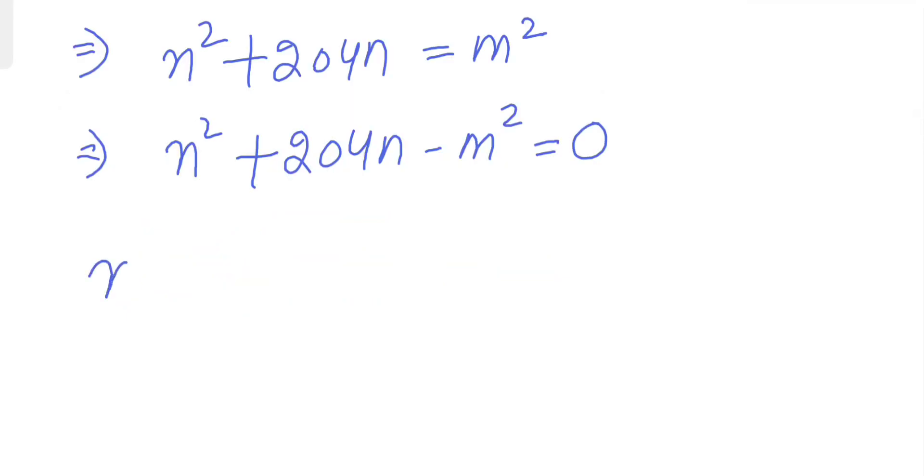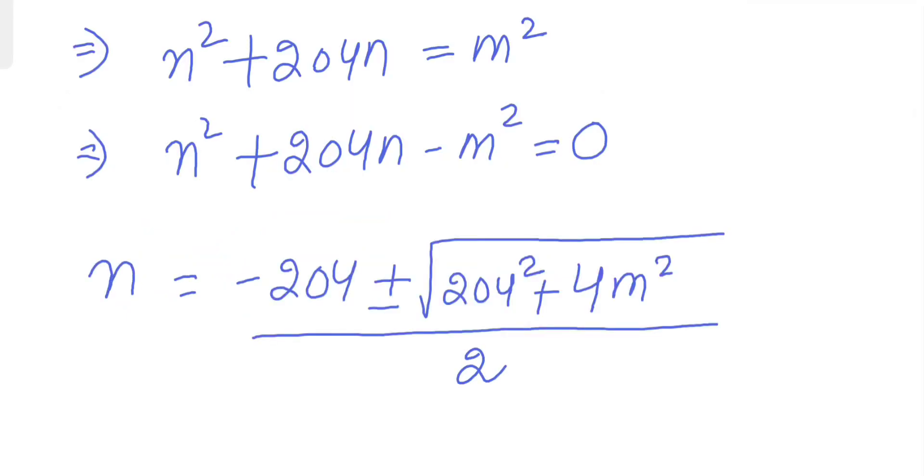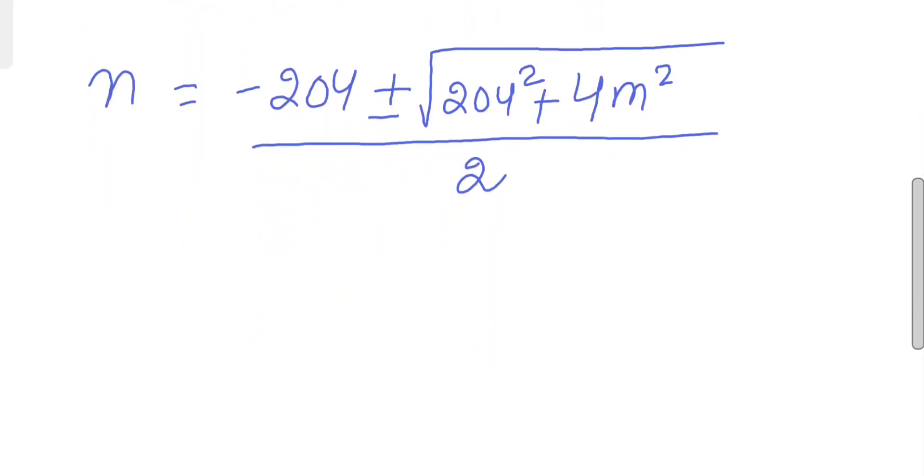Then n will be... in order to be a positive integer, we have to take our discriminant: 204² plus 4n² must be an even perfect square.